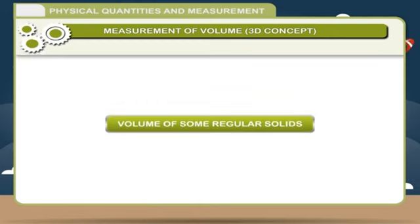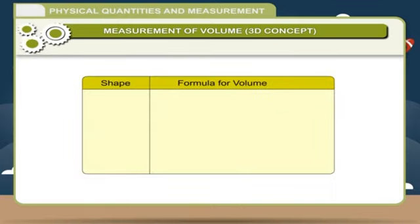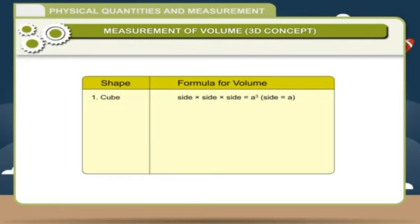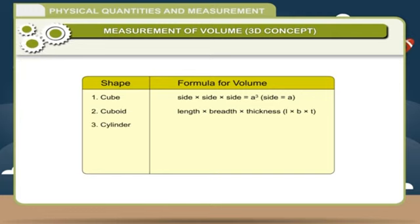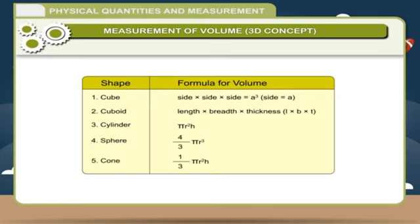Volume of some regular solids — Shape and formula for volume: (1) Cube: side × side × side = a³, where side = a. (2) Cuboid: length × breadth × thickness = L × B × T. (3) Cylinder: π r² h. (4) Sphere: 4/3 π r³. (5) Cone: 1/3 π r² h.